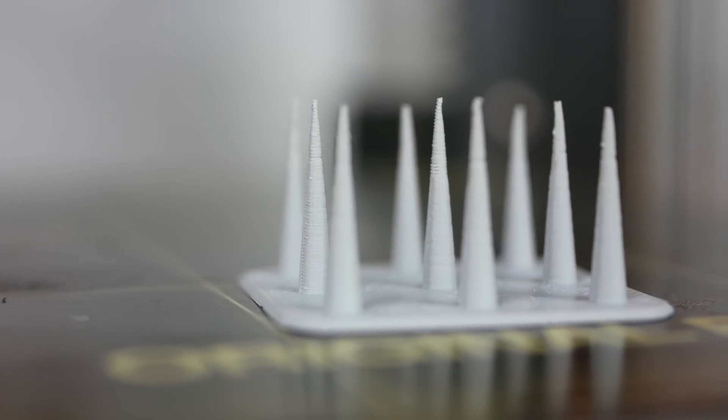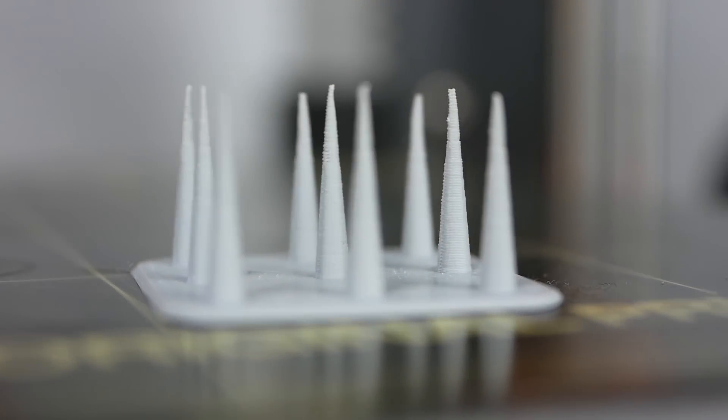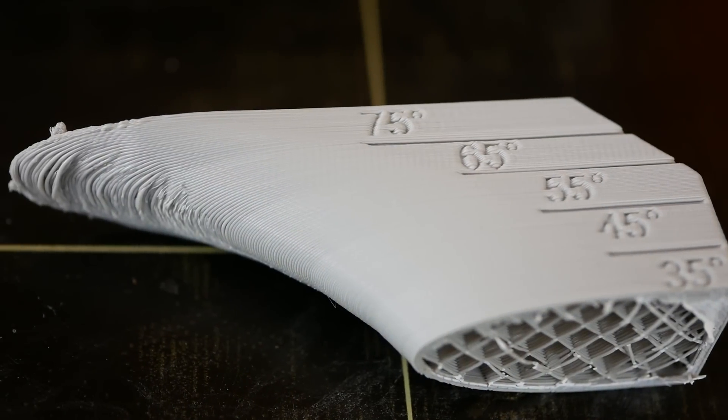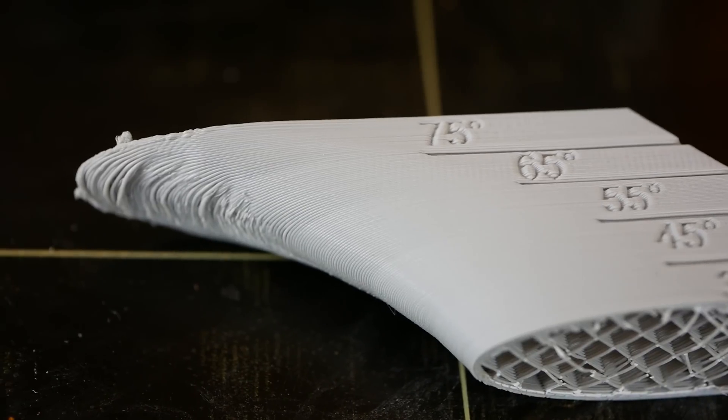The ASA showed no stringing at all and with a small amount of cooling air even the tiny needles printed flawlessly. Overhangs printed well up to 65 degrees and then started to droop.